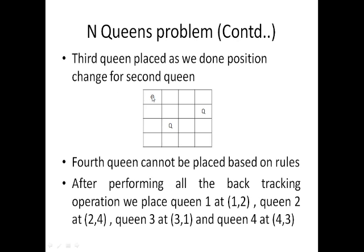The 1st queen, already placed in the 1st position, is moved to the 2nd position. This is the backtracking procedure. When moving the 1st queen to position 1,2: Queen 1 is placed at 1,2; Queen 2 is placed at 2,4; Queen 3 is placed at 3,1; Queen 4 is placed at 4,3. The diagram explains the final placement.